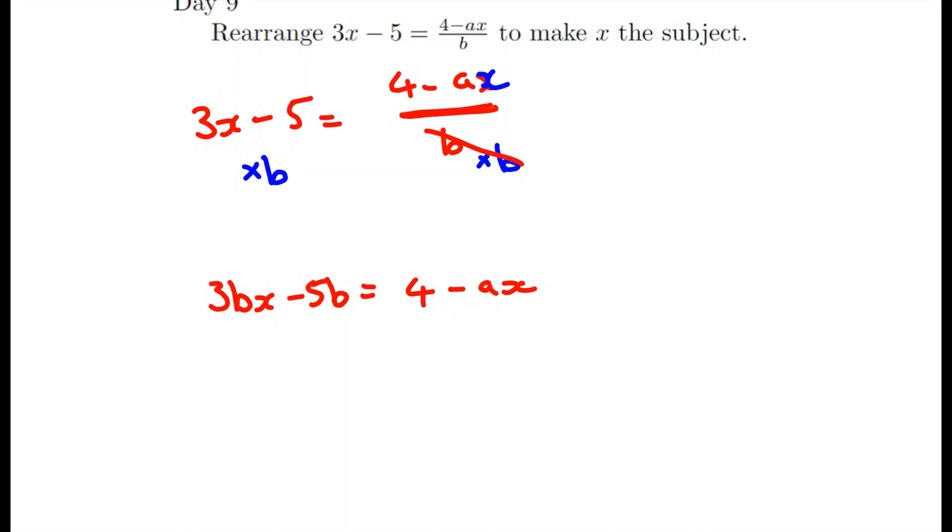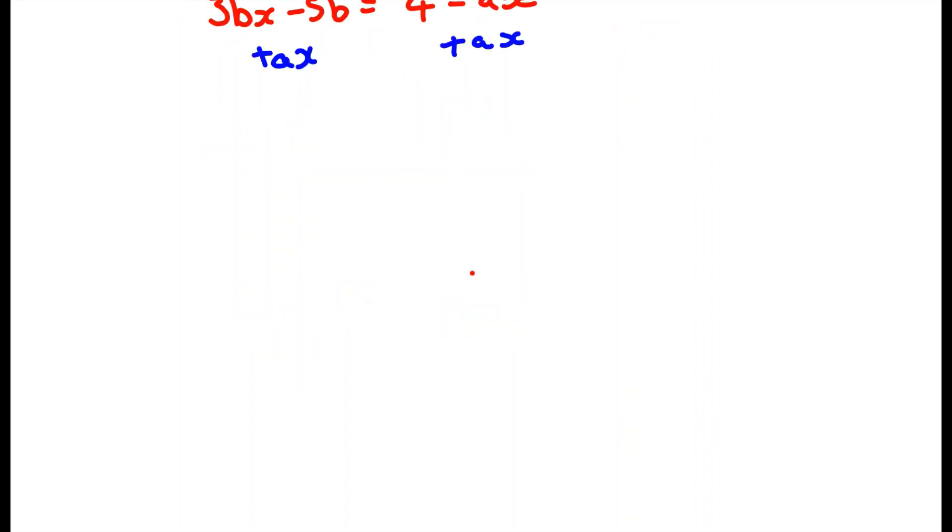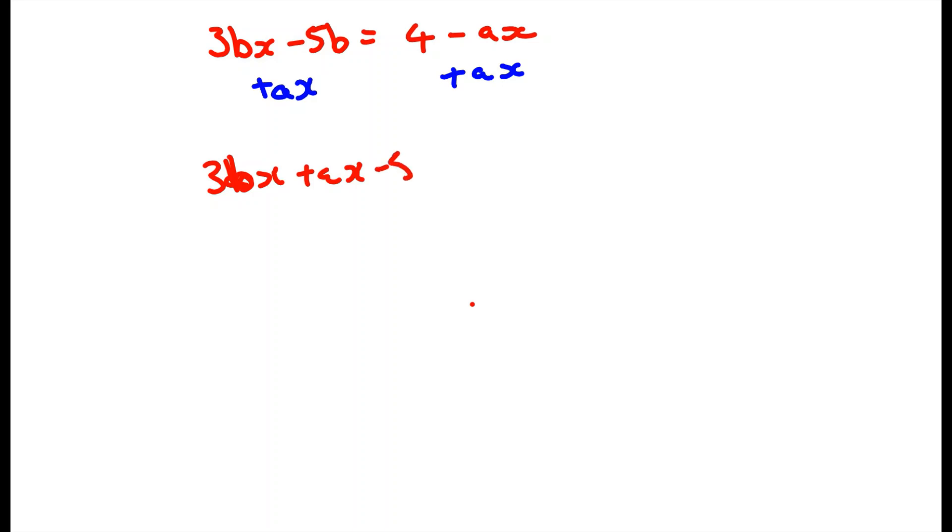Now I'm going to collect all the x's to one side. I think the best thing to do to keep everything positive is to add ax to both sides. So this is going to give us 3bx plus ax take away 5b equals 4.